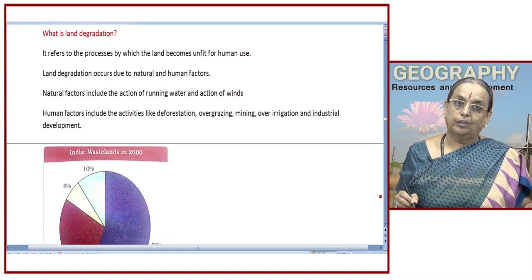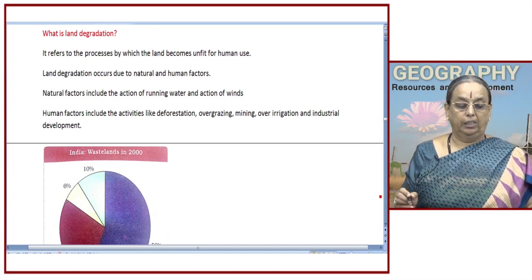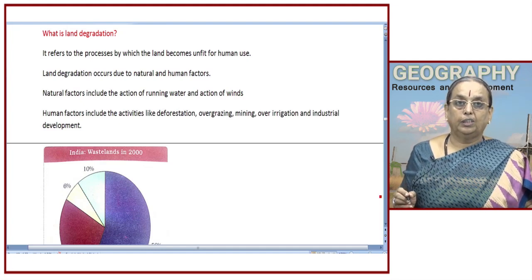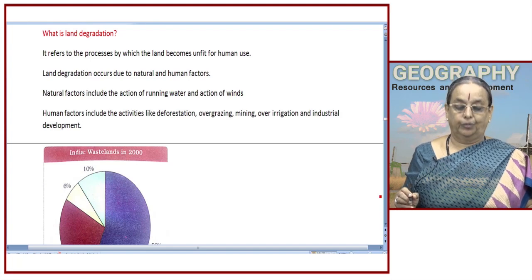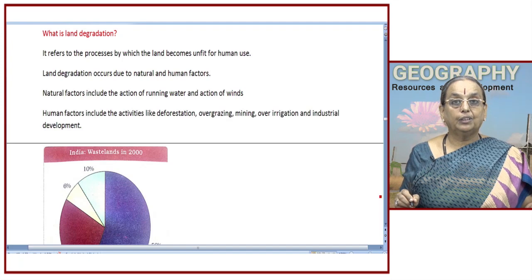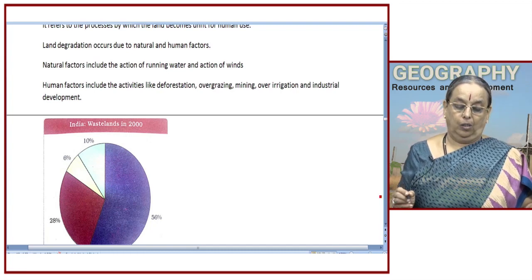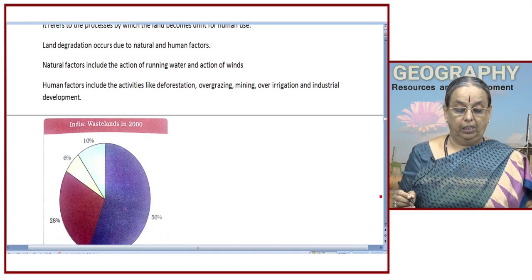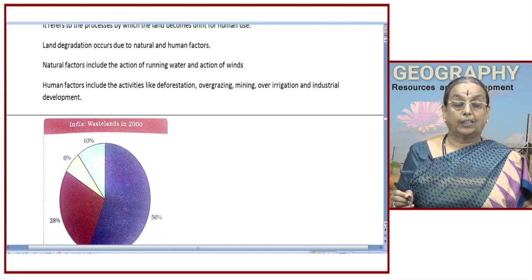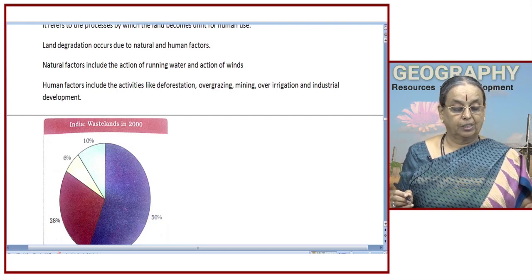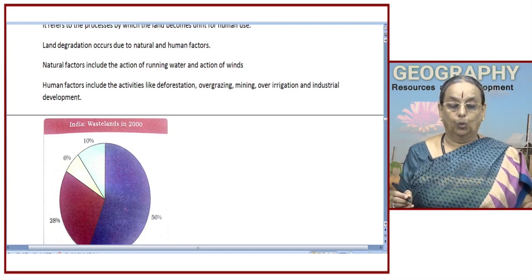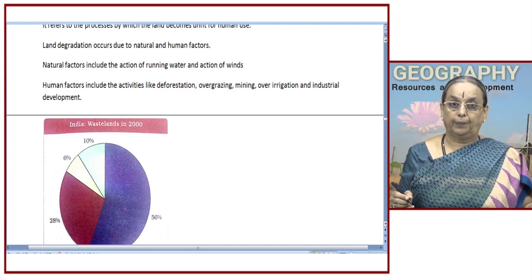Land degradation is caused due to natural and human factors. When you talk about natural factors, one of the very important factors is the action of running water and the action of winds. Wherever rivers are flowing, we have a serious problem of soil erosion — due to lack of maintenance, the top soil gets washed away, causing serious problems for agriculture. When it comes to human factors, there are various activities like deforestation, over grazing, mining, over irrigation, and industrial development that have contributed in a big way to land degradation.